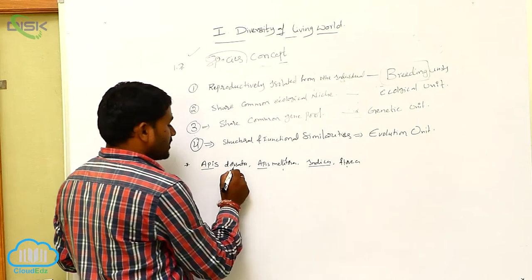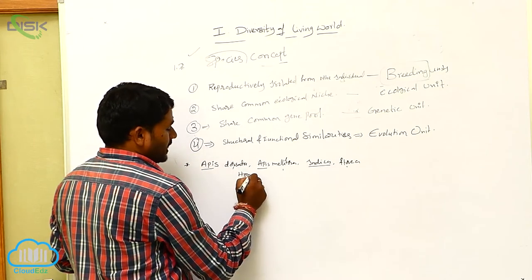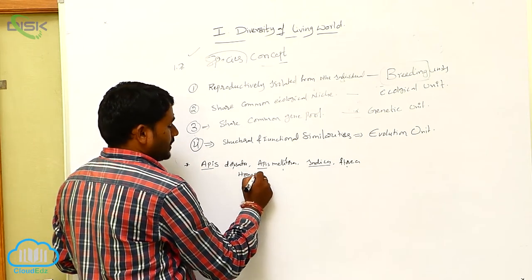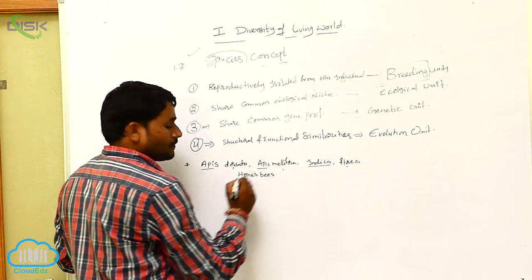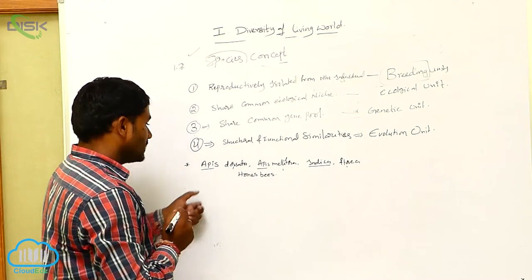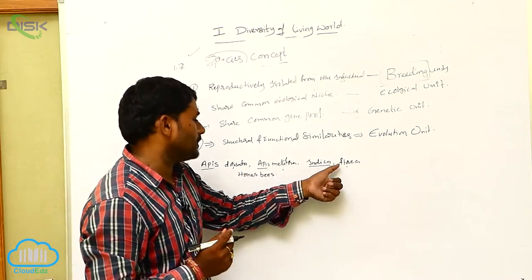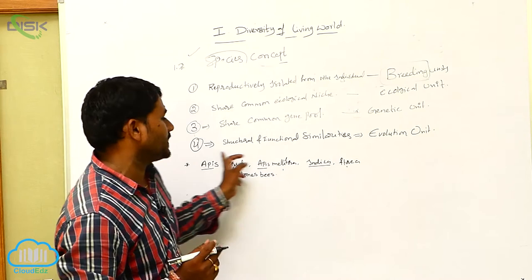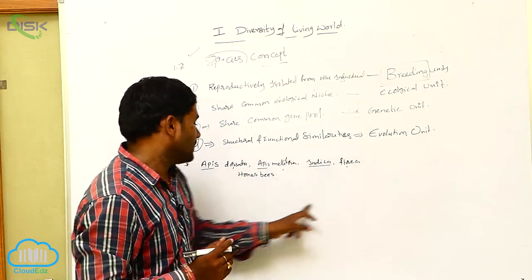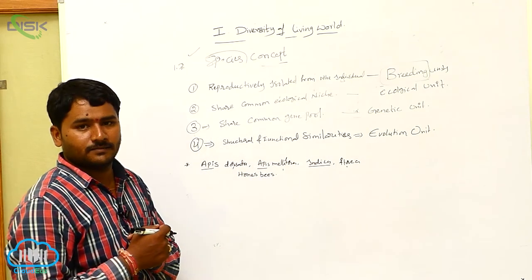Apis dorsata — these are all scientific names of the honeybees. So Apis dorsata, Apis mellifera, Apis florea, Apis indica — these are the different species that belong to the same genus.